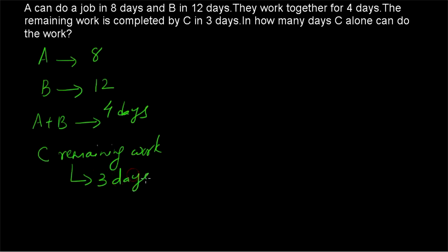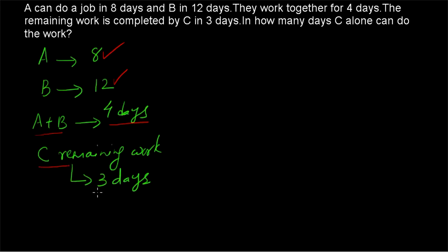So how many days will C take if he is working alone? A is taking 8 days to complete the work and B is taking 12 days. A and B are working together for 4 days, completing some portion of the work. The remaining work is done by C, who completes it in 3 days. Using the chocolate approach, the number of chocolates equals the amount of work to be finished.